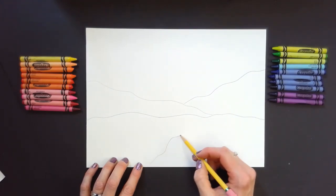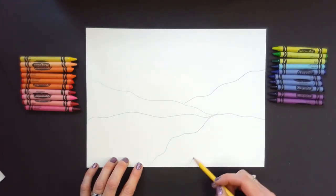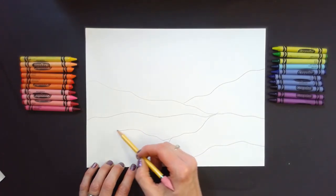To begin, use a pencil to draw your landscape. Think about the horizon line, which is the line that separates the earth and the sky.